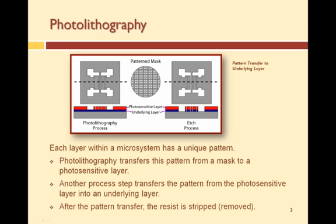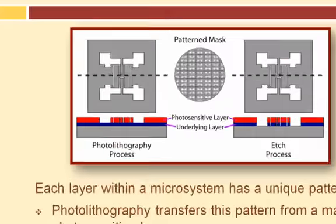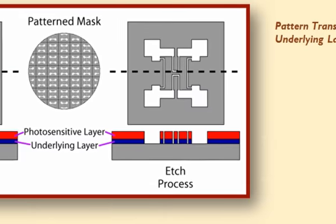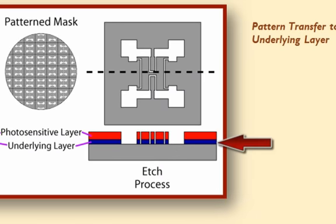The basic concept of photolithography is to transfer the pattern of a mask or reticle into a layer by first transferring the pattern into a photosensitive layer called photoresist or resist. Once the pattern is within the resist, it is transferred to the underlying layer or layers using an etch process.